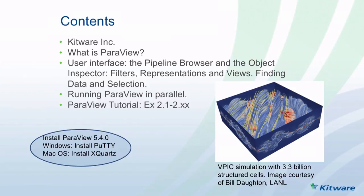First, I'm going to talk a little bit about Kitware — just one slide. Then I'm going to describe what ParaView is. We're going to talk about the user interface, the pipeline browser, and the object inspector, and some important objects in ParaView: filters, representations, and views. And I'll talk about finding data and selection.